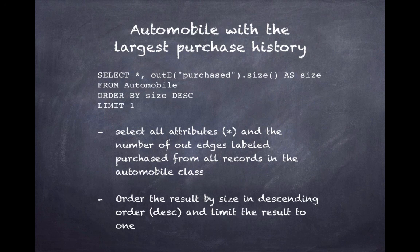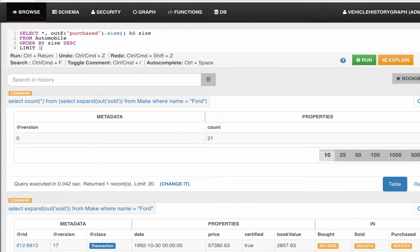It'll tell us how many edges are labeled purchased with respect to a vertex. So we can do this. Select all the attributes and the number of edges labeled purchased from all records in the automobile class. We're going to order this result by size in descending order and limit the result set to 1. This ought to tell us which vehicle was purchased the most amount of times. We can see this query running in studio as well.